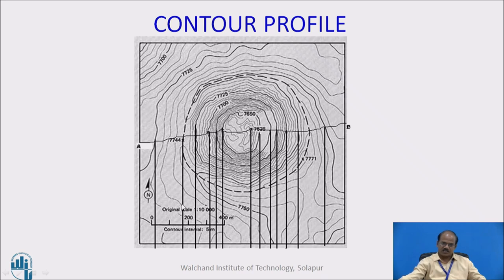All in all, 13 number of lines are there which are passing through the points of our interest, and those have been vertically projected down.